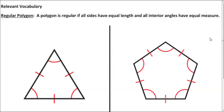Here we have a little bit of vocabulary recall. On the left, we have an equilateral triangle, which is also a regular triangle. And on the right, we have a regular pentagon. And the term regular means that all of the sides of the polygon have the same measure, so they're congruent, and all of the interior angles have the same measure.